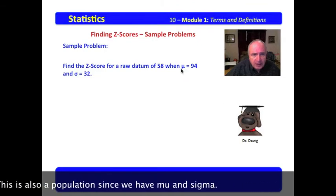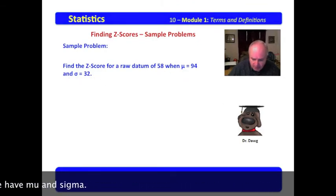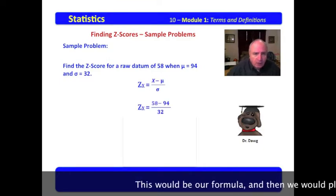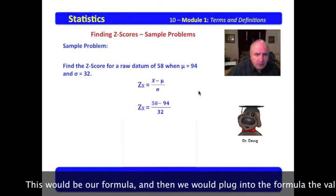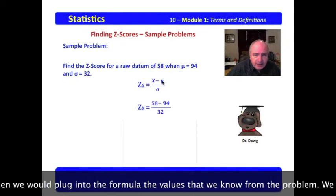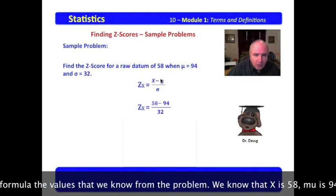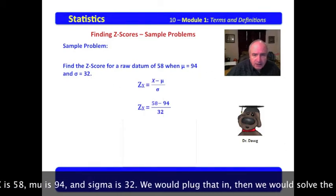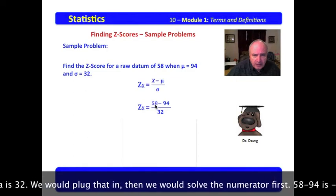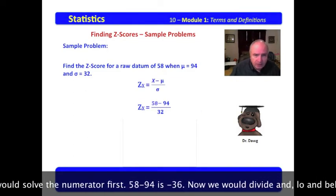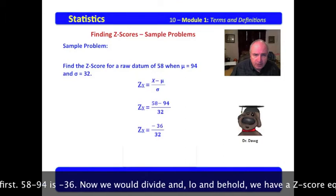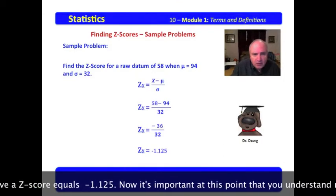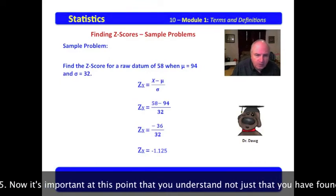This is also a population since we have μ and σ. This would be our formula, and then we would plug into the formula the values that we know from the problem. We know that x is 58, μ is 94, and σ is 32. We would plug that in, then we would solve the numerator first, 58 minus 94 is negative 36. Now we would divide, and lo and behold, we have a z-score equals -1.125.